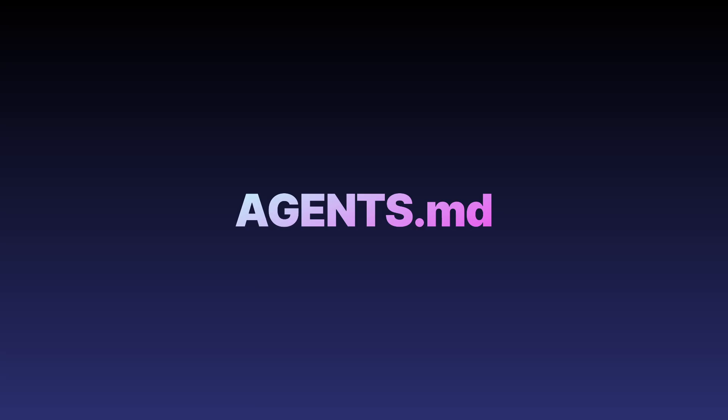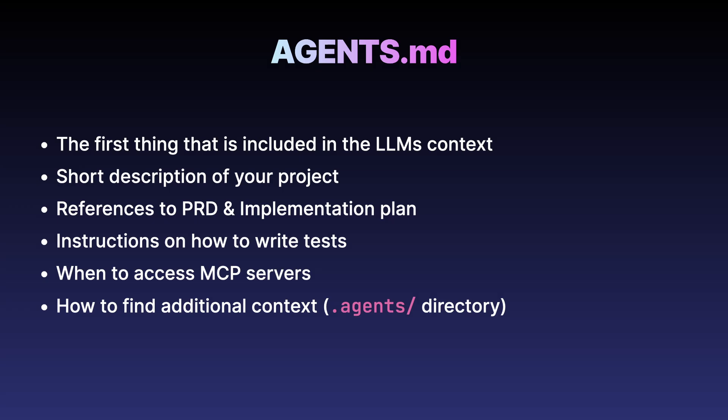Let's talk about the agents.md file. This is one of the first things included in the LLM's context after the system prompt. It's very important because models pay more attention to the beginning and end of the context. In this file, you want a short project description, references to your PRD and plan, and instructions like 'always run dart format and dart analyze' and 'always write and run tests.' You also want to include information on how the agent should use MCP servers. Without those instructions, chances are your agent will never access the MCP servers you're providing. You can also point to additional context in the .agents directory. Here you can place additional information that doesn't need to be in the agent's context for every single task, but it can look at it when it needs it. Every time the agent makes a mistake, add a rule to your agents file — and chances are smaller that it will make the same mistake again.